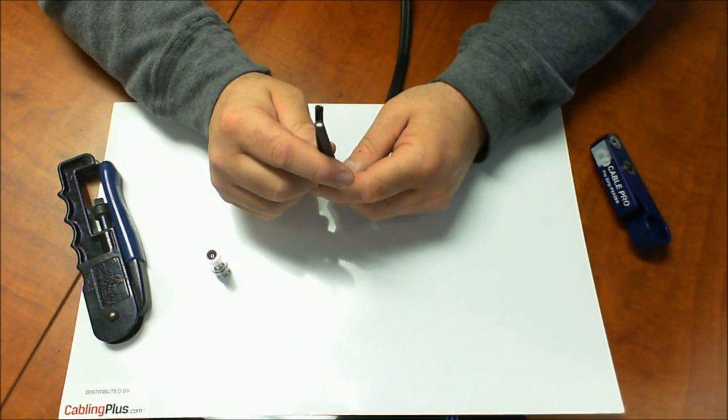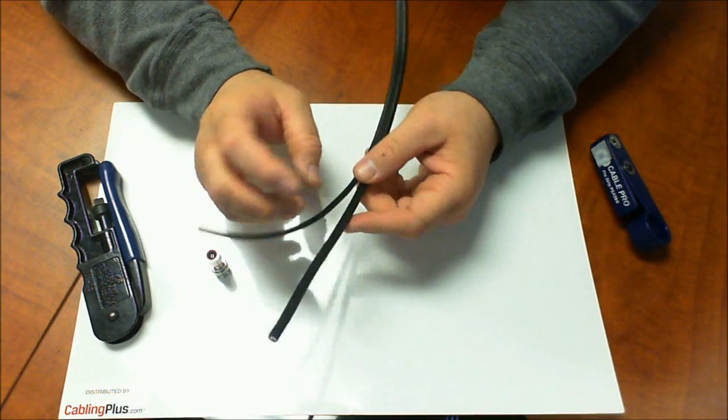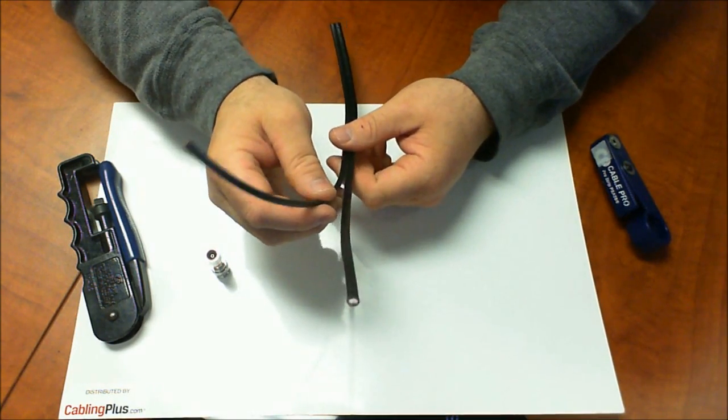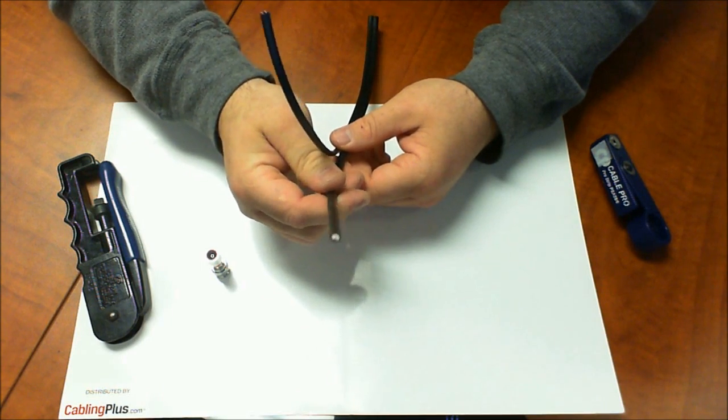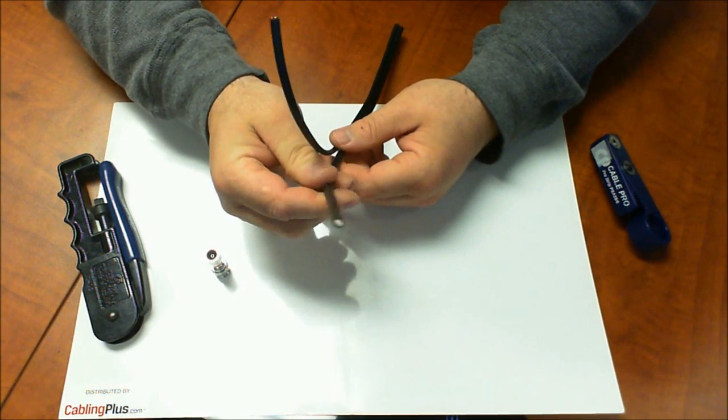This is the most common cable to use in security camera installations. It's a Siamese cable with your 18.2 power and your video cable, your RG59, that's going to be used for the video.